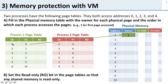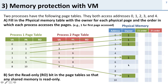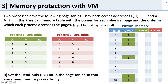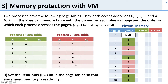Virtual address 0 in process 1 translates to physical address 0, so process 1 owns physical page 0. Virtual address 2 translates to physical address 1, so it also owns physical page 1. Process 2 also maps virtual address 0 to physical address 0, so both processes share that physical page — it's shared data. We can then go through the remaining translations to see which physical pages each process owns.